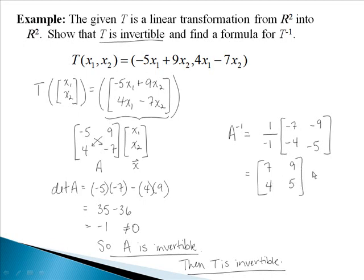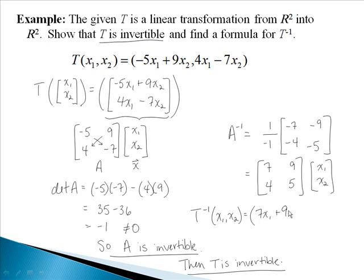Multiplying that by the vector x, we get that T inverse of x is 7x₁ plus 9x₂ for the first component, and 4x₁ plus 5x₂ for the second component.